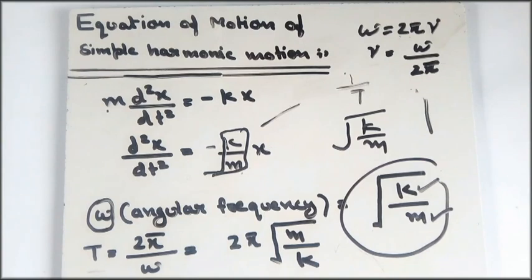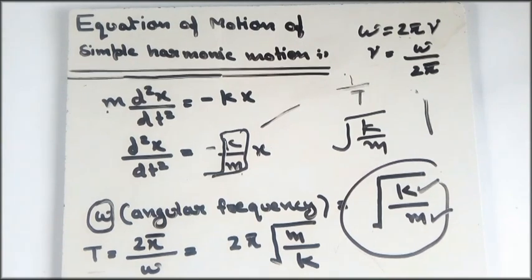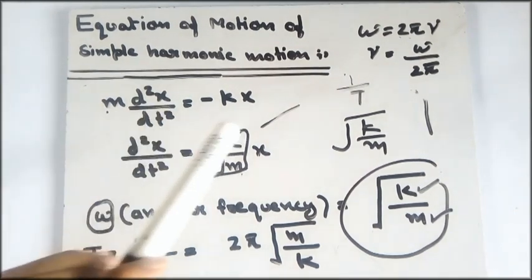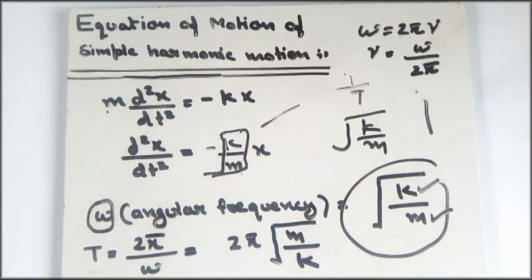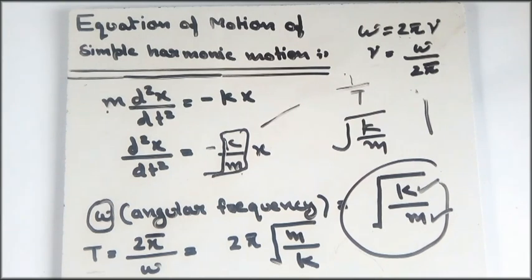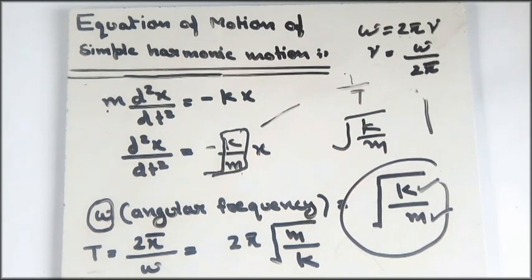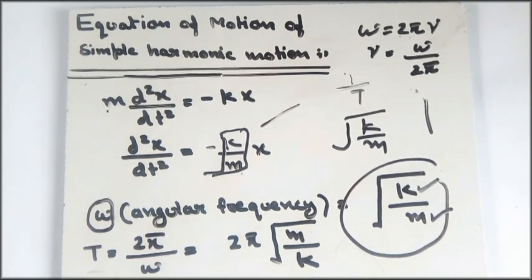This is how we extract two very important quantities — angular frequency and time period — from the equation of motion of simple harmonic motion. The spring-mass system is not the only system exhibiting SHM; oscillations in a U-tube, a simple pendulum, a compound pendulum, and many other systems also govern simple harmonic motion.